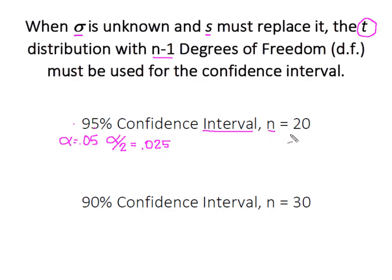I have n of 20, but the t-distribution is based on n minus one degrees of freedom, so my degrees of freedom is 19. What I'll look up in my table is t of 0.025 at 19 degrees of freedom.